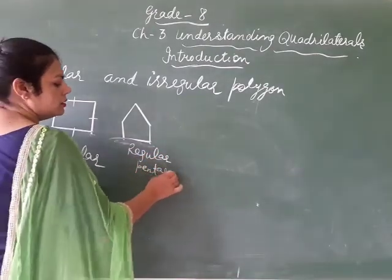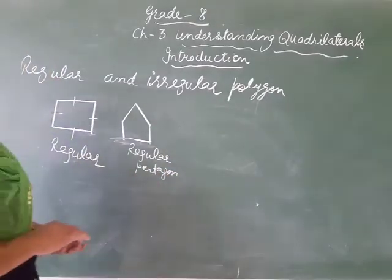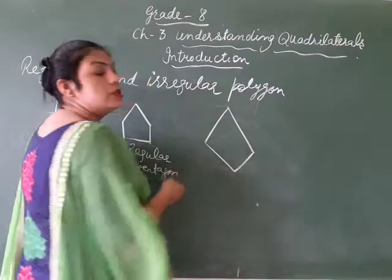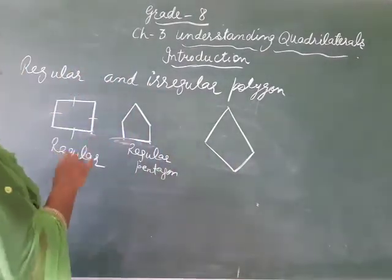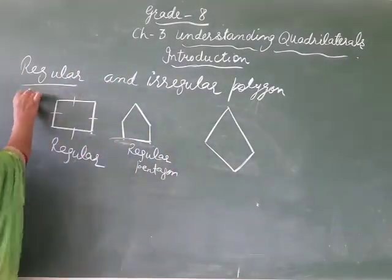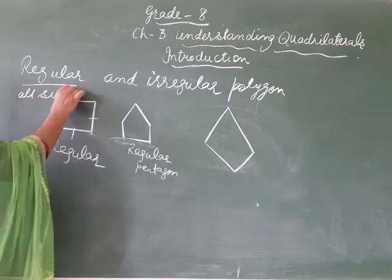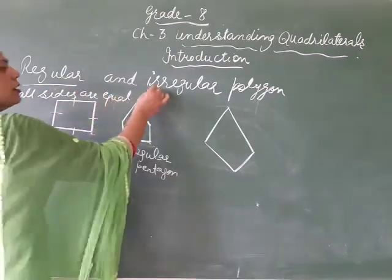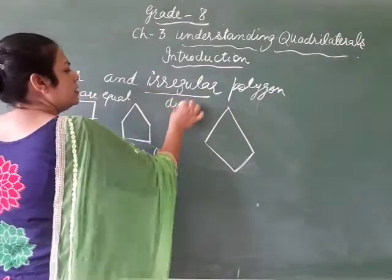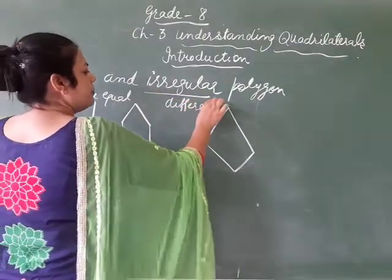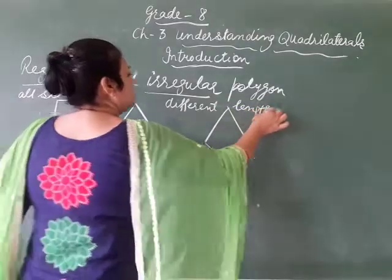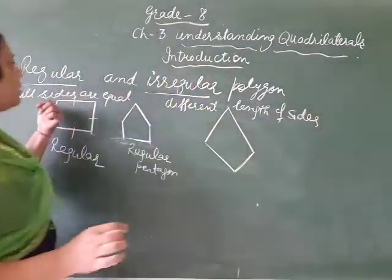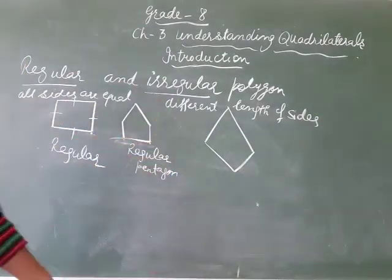Regular hexagon — here. And irregular polygons are those which have different lengths of sides. These are called irregular polygons. Regular means all sides are equal, and irregular means different lengths of sides. These are regular polygons and these are irregular polygons.